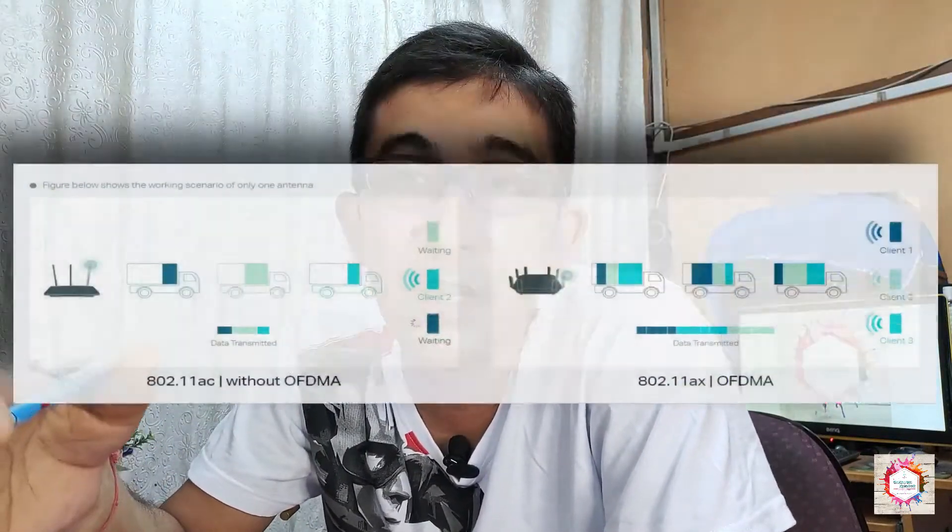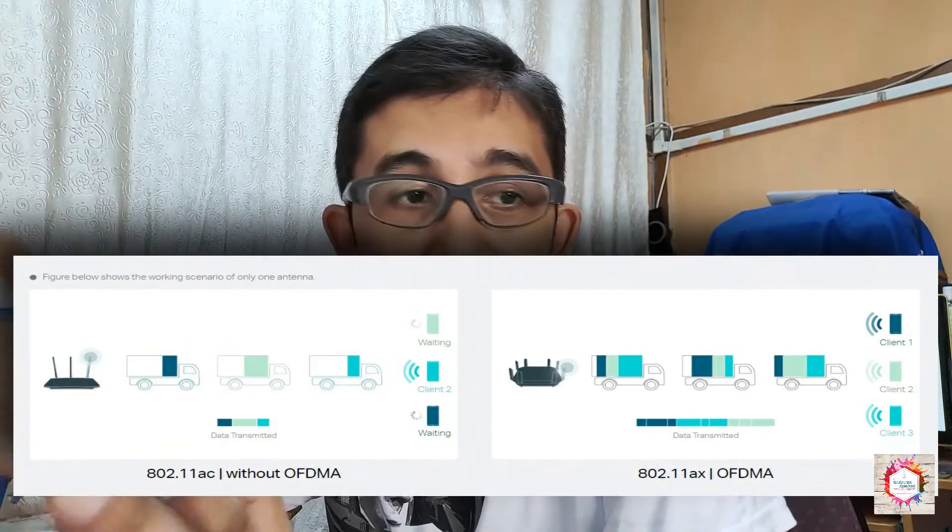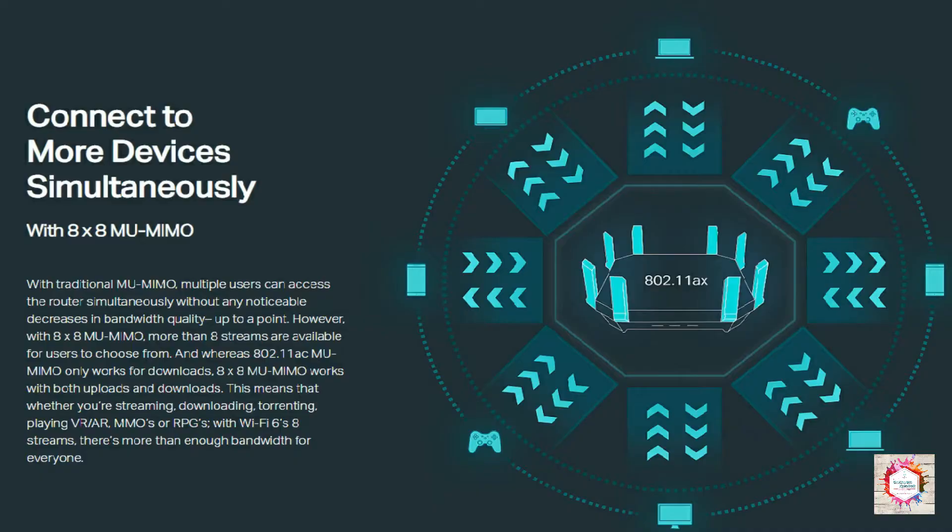With 802.11ac, Wi-Fi devices can transfer only one data packet at a time. But with OFDMA technology in the sixth-generation router, multiple data packets can be delivered to all devices at the same time, including both uploads and downloads simultaneously.